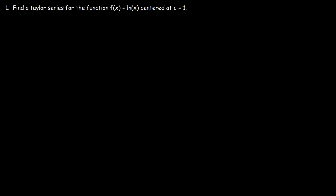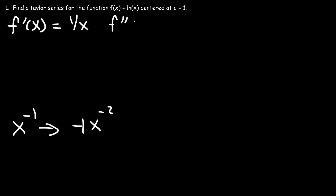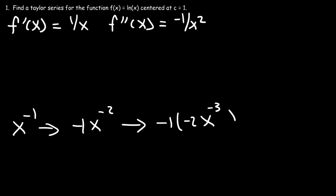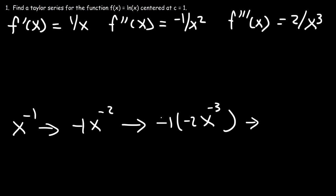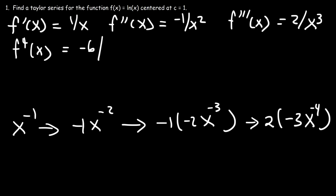What we need to do is write out the first four derivatives. So f'(x), the derivative of ln(x), is 1/x. The second derivative — rewriting and using the power rule — is negative 1 divided by x squared. The third derivative is 2 divided by x cubed. And the fourth derivative: negative 1 times negative 2 is positive 2, times the derivative of x to the negative third, which is negative 3x to the negative fourth. So the fourth derivative is negative 6 divided by x to the fourth power.